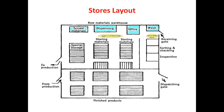Regarding the stores layout: materials enter through a receiving gate, go to a wash/quarantine area where sorting, checking, and inspection are done, then proceed to the office for storing materials, then dispensing after approval. These materials can then be issued, with special storage precautions taken, before going to production.